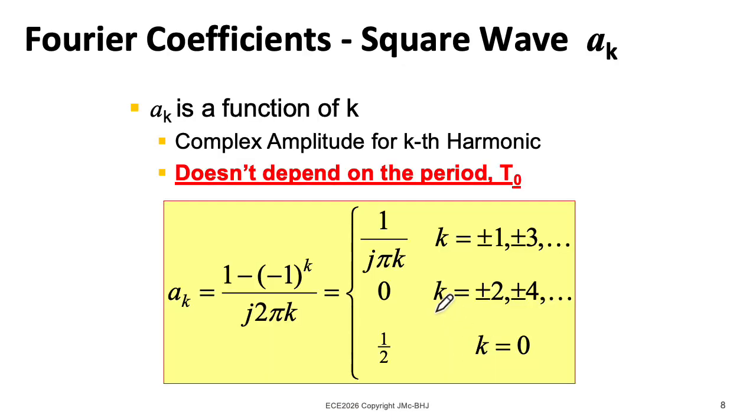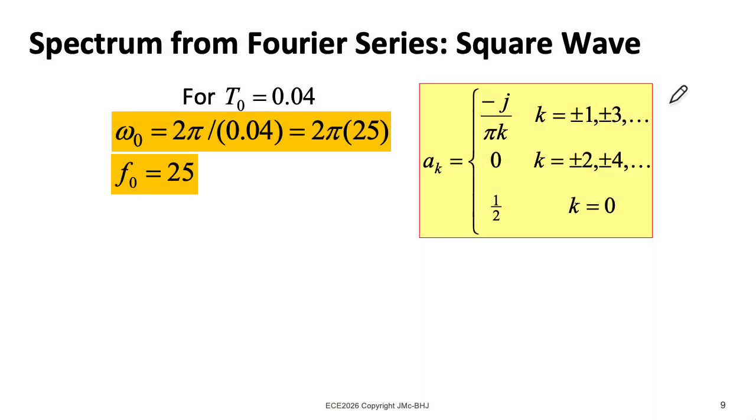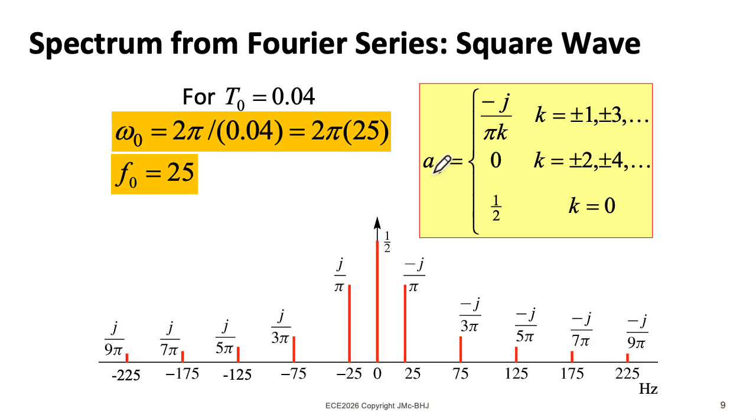So putting that all together, we see that the Fourier series coefficients are zero for even k, besides k equals zero. For k equals zero, we get one half. That's the DC value. And for odd k, it's one over jπk. Let's plot the spectrum. So for a period of 0.04 seconds, that's a frequency of 25 hertz. And the spectrum looks like this.